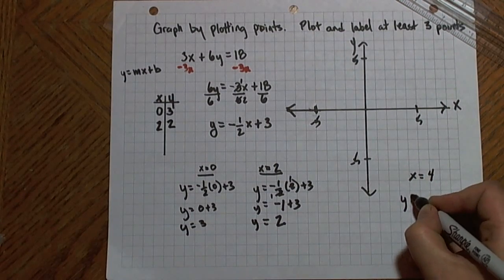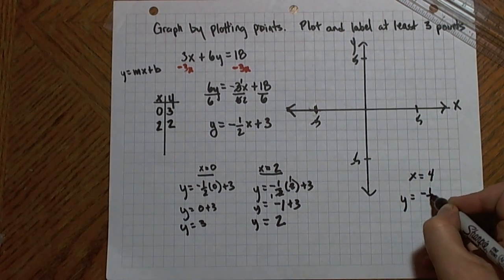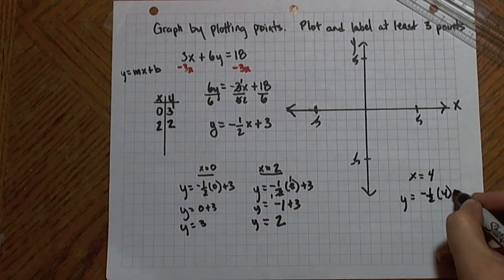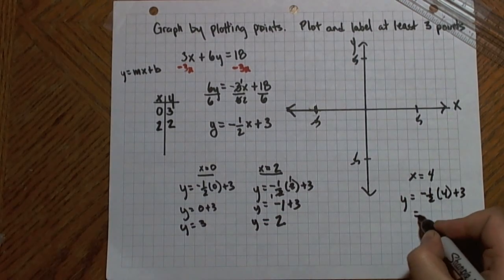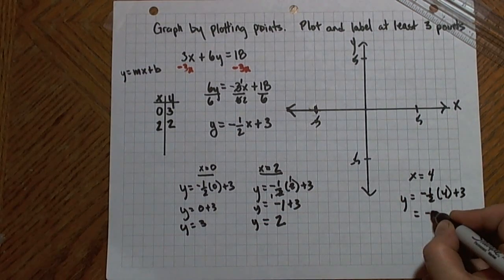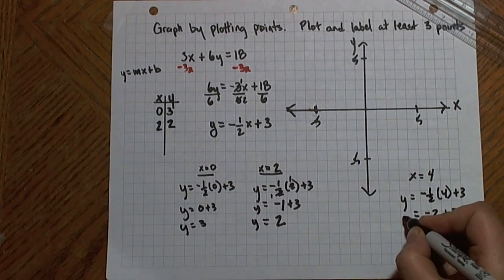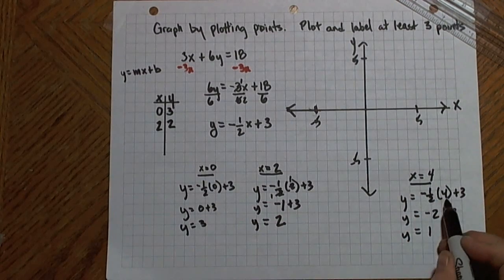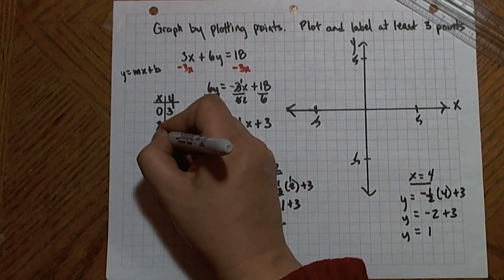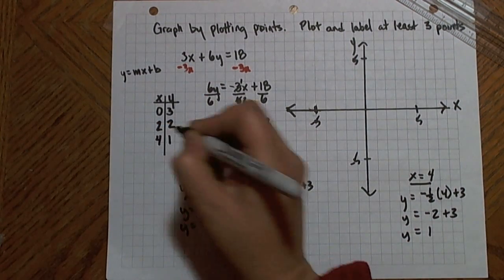So I have y equals negative 1 half times 4 plus 3. Negative 1 half times 4 is negative 2, plus 3 is 1. So when x equals 4, I get y equals 1. And I get that point 4, 1.